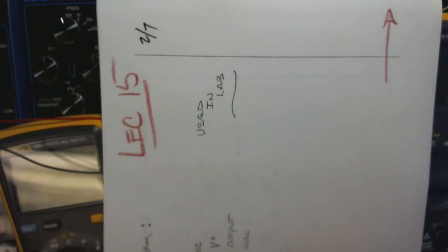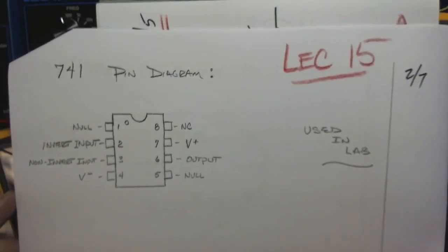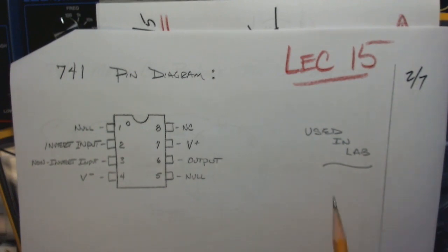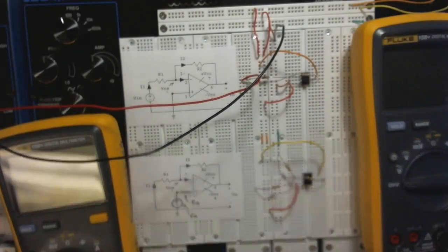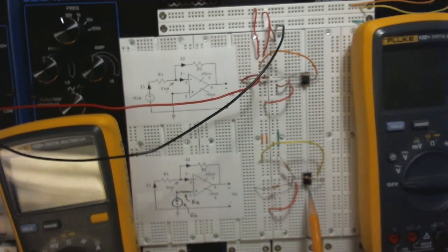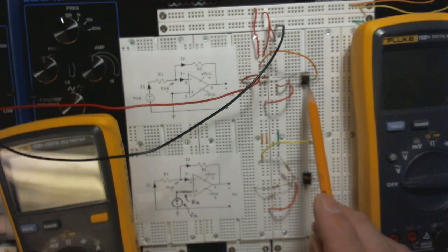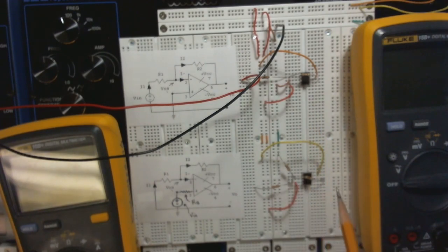Going back to lecture 15, we can see the pin diagram. These are just the PDFs from the lecture notes. Here's the pin diagram. There's the chip for the first circuit and there's the chip for the second circuit — both are the exact same chips. You can see they're pretty small compared to the pencil tip.